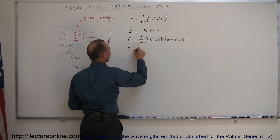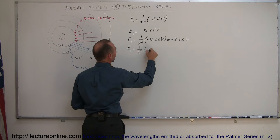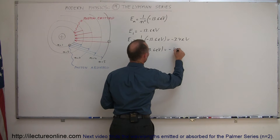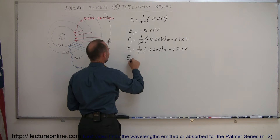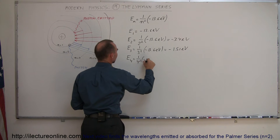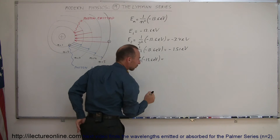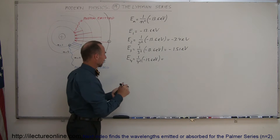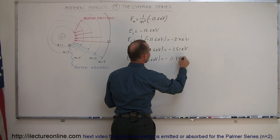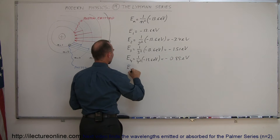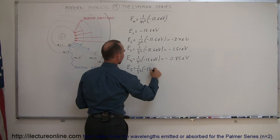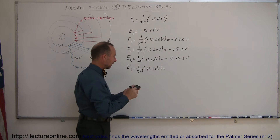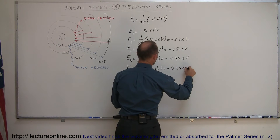For n equals 3, that's equal to 1 over 3 squared, or 1 over 9, times minus 13.6 electron volts, which equals minus 1.51 electron volts. For the fourth level, 1 over 4 squared times minus 13.6 electron volts — using a calculator, 13.6 divided by 16 gives us minus 0.85 electron volts. And finally, the fifth level is equal to 1 over 5 squared times minus 13.6 electron volts: 13.6 divided by 25 gives us minus 0.544 electron volts.